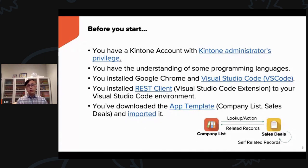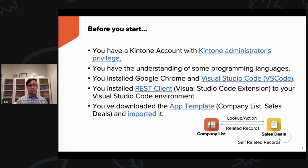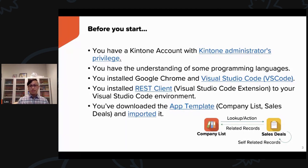Before you start, make sure you have a Kintone account with Kintone administrator's privilege. You have an understanding of some programming languages — in this tutorial we'll be using JavaScript. You should install Google Chrome and Visual Studio Code, and install the REST Client extension in Visual Studio Code. You've also downloaded the app template, which has a company list and sales deals app. Make sure you import it into your subdomain — you can find the link in the description below.